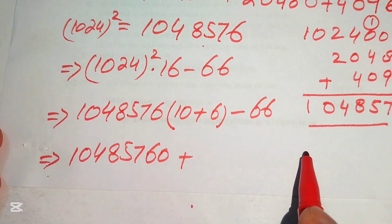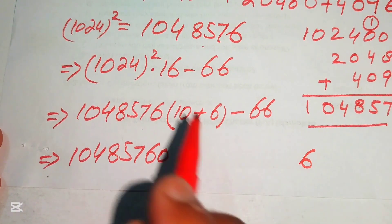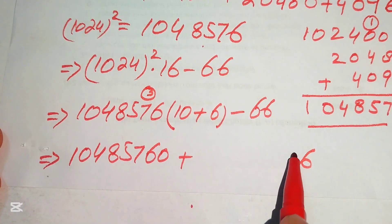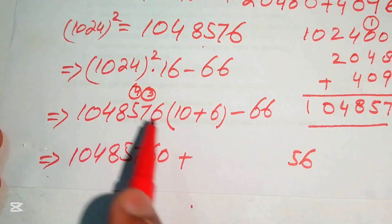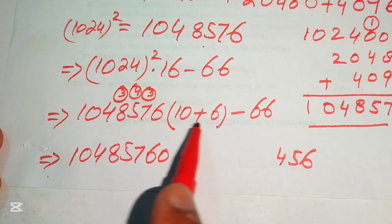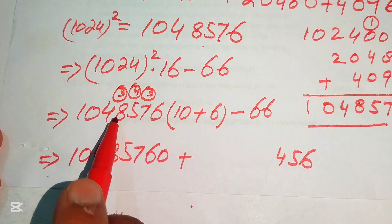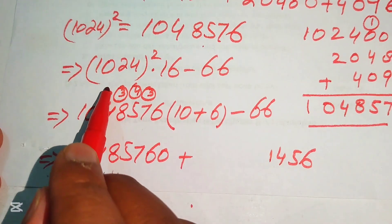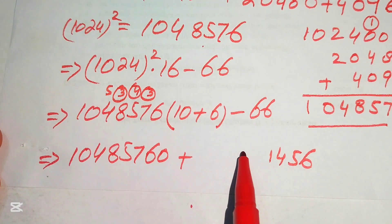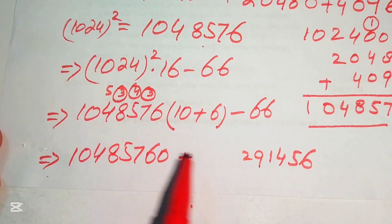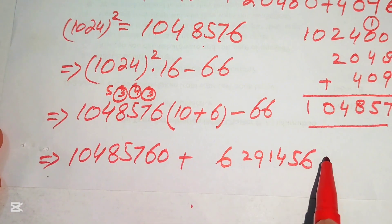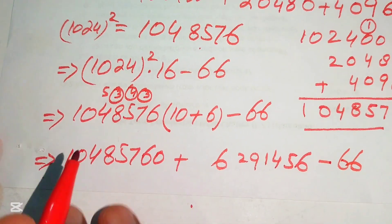Now multiplying 1,048,576 by 6: 6 sixes are 36 — write 6 carry 3; 6 sevens are 42, plus 3 is 45 — write 5 carry 4; 6 fives are 30, plus 4 is 34 — write 4 carry 3; 6 eights are 48, plus 3 is 51 — write 1 carry 5; 6 fours are 24, plus 5 is 29 — write 29; 6 ones are 6. Result: 6,291,456.